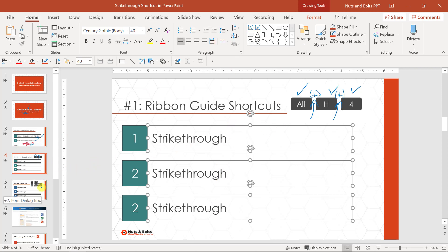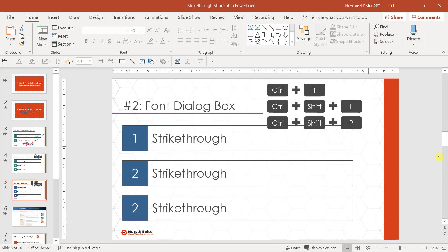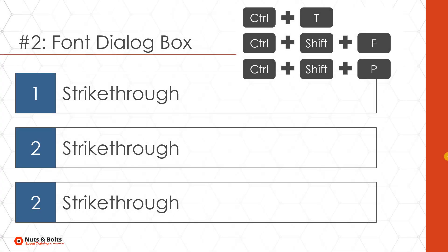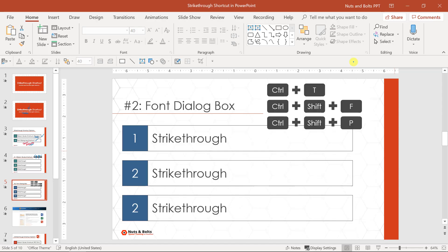The second way is using your font dialog box shortcuts. There are three different font dialog box shortcuts you can choose from. I like the Control T shortcut the best because it only has two keys, and note that you do need to hold these keys down to make them work.